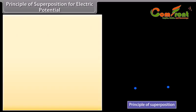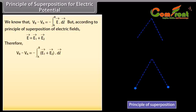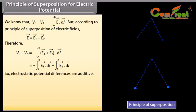Principle of superposition for electric potential. Let us consider two point charges plus Q1 and plus Q2. Take any two points A and B in the combined electrostatic field of the two charges. Choose a curve L between A and B. We know that VB minus VA equals minus integration from A to B of E vector dot dL vector. According to the principle of superposition of electric fields, E vector equals E1 vector plus E2 vector. Therefore VB minus VA equals minus integration from A to B of (E1 vector plus E2 vector) dot dL vector. So, electrostatic potential differences are additive.